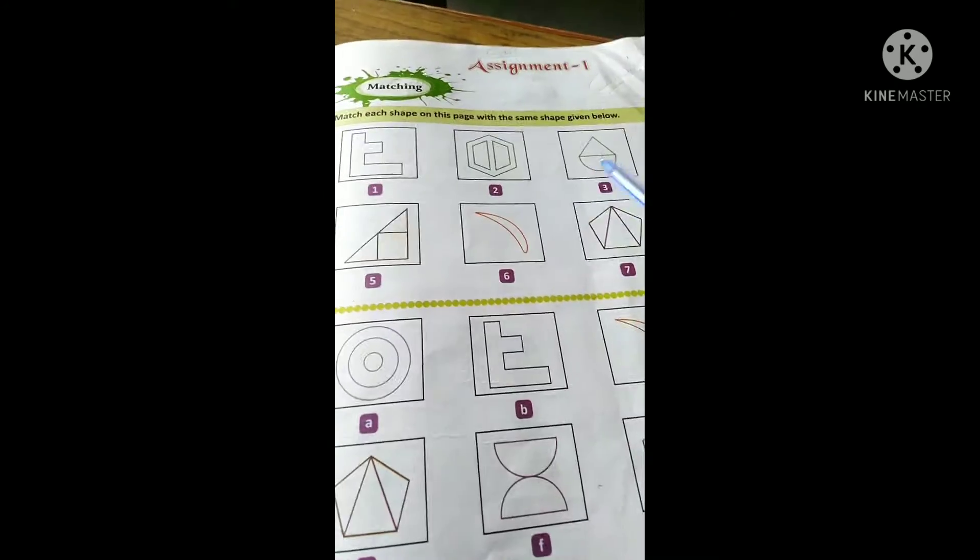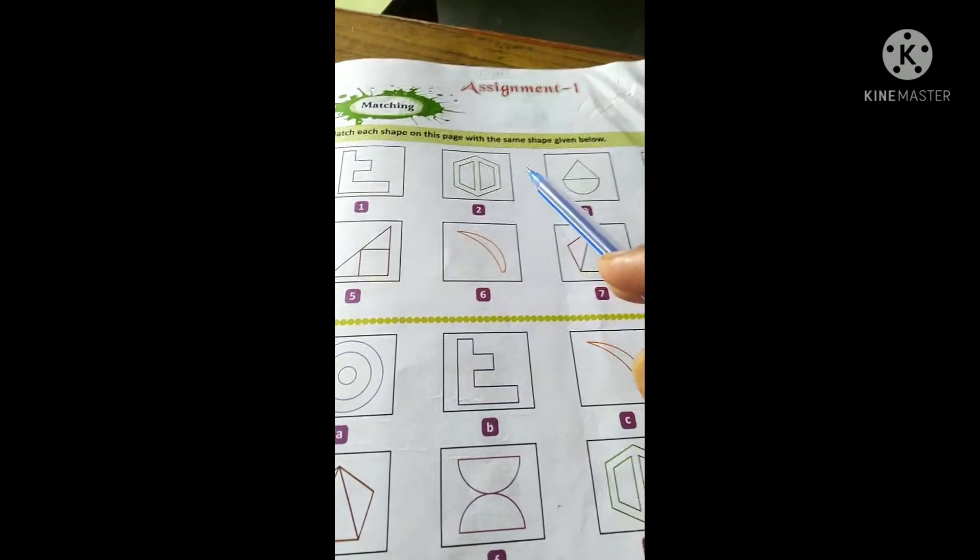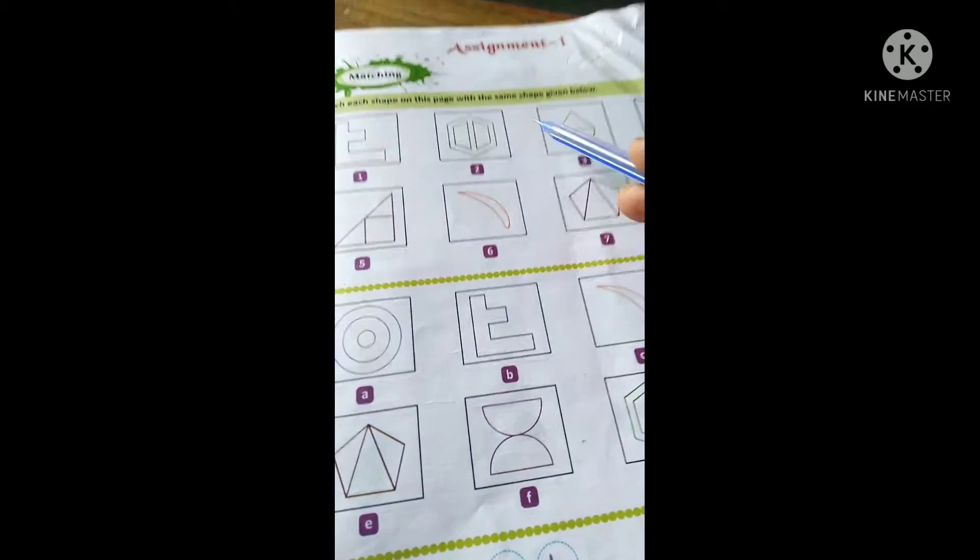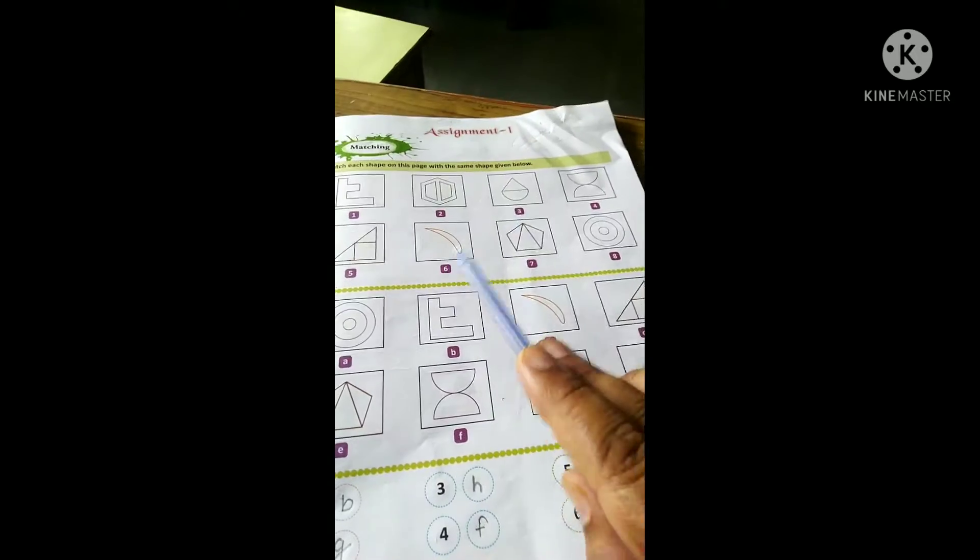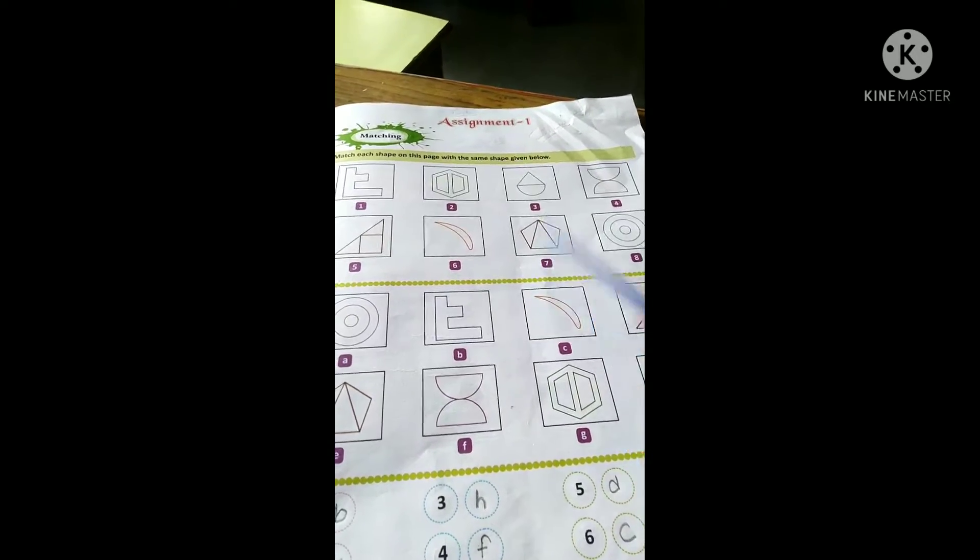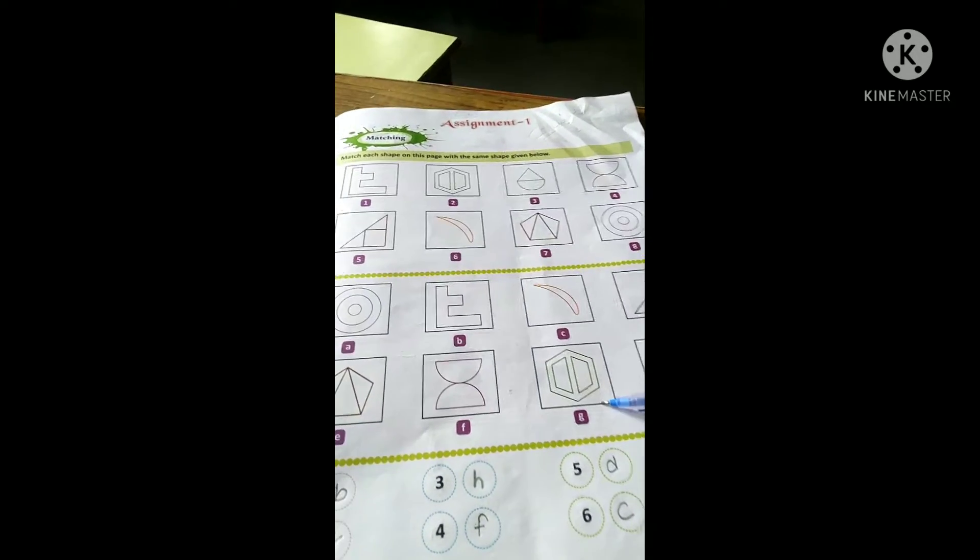Hello children, this is your aptitude book and here is the first assignment. Eight figures are given on the upper side and eight figures are given on the lower side.